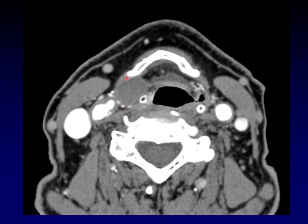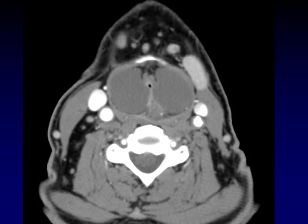Laryngoceles come in three forms: entirely intrinsic (staying within the cartilaginous boundaries of the larynx), extrinsic (almost all outside with just a tiny communication to the saccule), or mixed (with both external and internal components). Sometimes these can become very large — here are bilateral laryngoceles where the patient is breathing through a tiny little hole. He says he runs into trouble when he mows the lawn; it gives him shortness of breath.